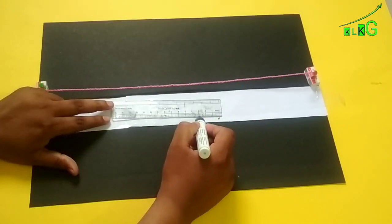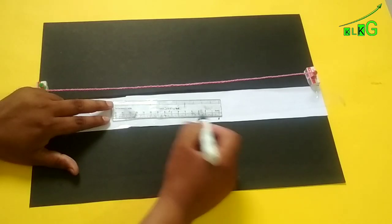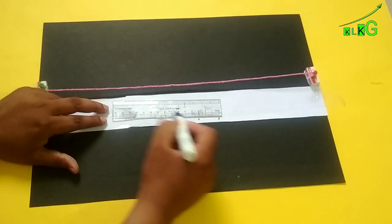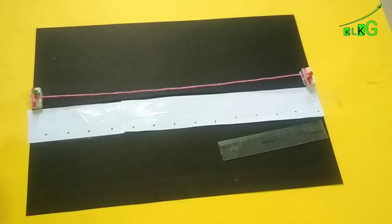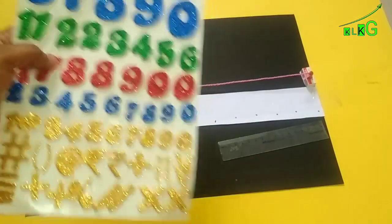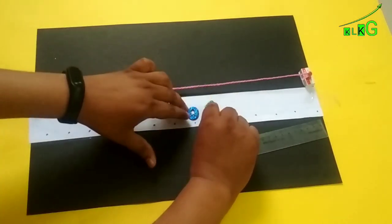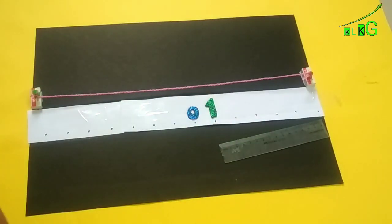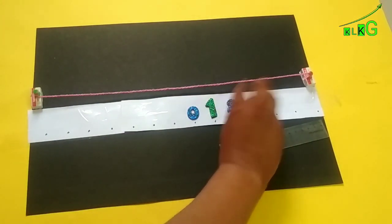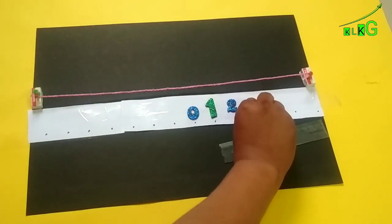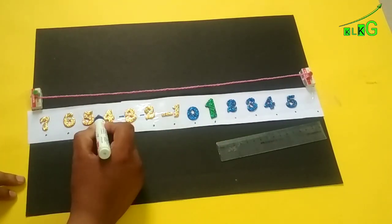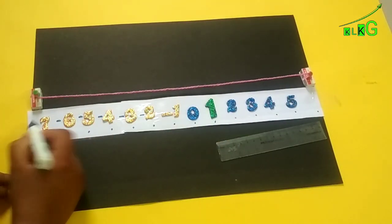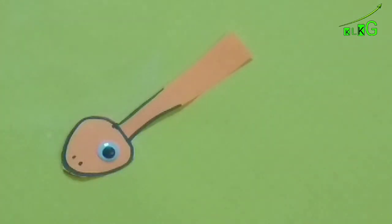Now at each three centimeters distance, make dots like this using a scale. I got this kind of number stickers from the local stationery. You can purchase it and paste it as I show you, or else you can write also with a marker or sketch pen.